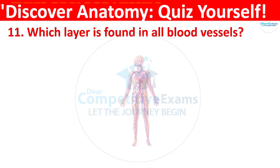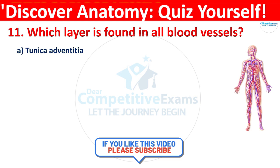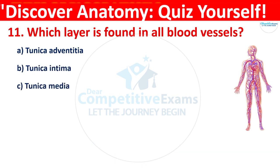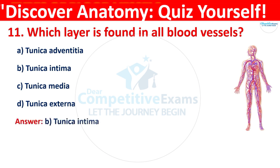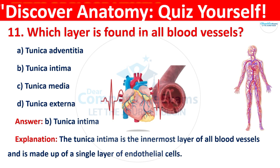Question 11: Which layer is found in all blood vessels? Your options are: Tunica adventitia, Tunica intima, Tunica media, or Tunica externa. The correct answer is B, that is Tunica intima. The Tunica intima is the innermost layer of all blood vessels and is made up of a single layer of endothelial cells.